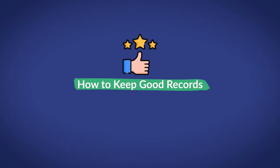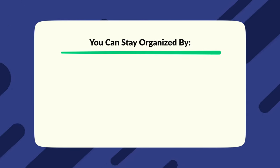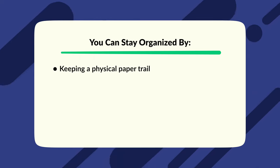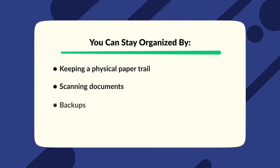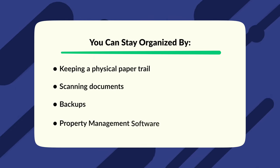How to keep good records: if the tenant disagrees with the eviction request and they reply to the court, it is extremely important that you keep very good records of everything so you can provide proof to the judge and win your case. This part can either make or break your entire eviction request in the event of a dispute. You can stay organized by keeping a physical paper trail, scanning documents, creating backups, or using property management software.